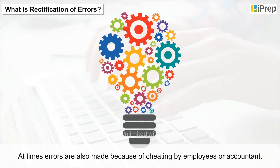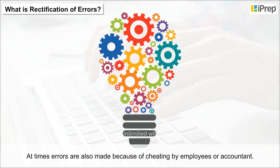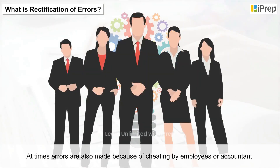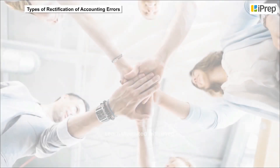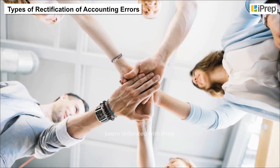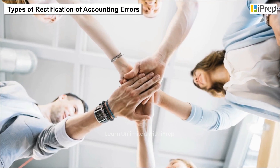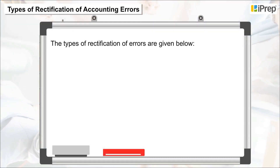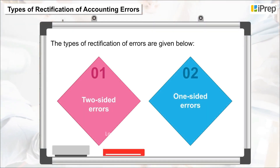At times, errors are also made because of cheating by employees or the accountant. The types of rectification of accounting errors are given below.